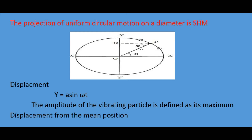From point P, draw PN perpendicular to y-y dash. As the particle moves from x to y, the foot of the perpendicular N moves from O to y. As it moves further from y to x dash, then from x dash to y dash and back to x, the point N oscillates along the diameter. When the particle completes one revolution, point N completes one full vibration about mean position O. Hence the projection of uniform circular motion on a diameter is Simple Harmonic Motion.